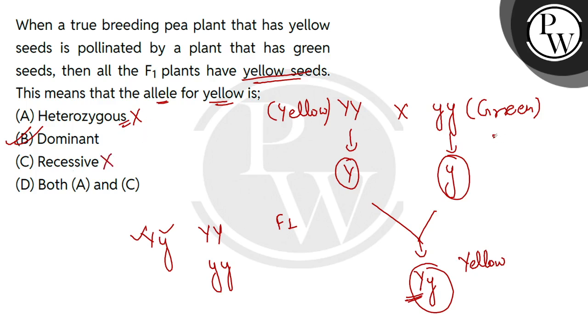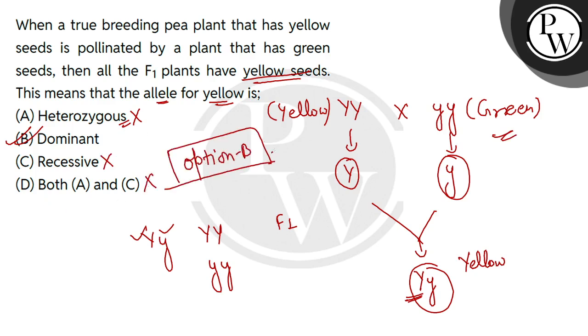So options A and C are not correct — the correct answer is option B, dominant. Hope you have understood this solution. Thank you, all the best.